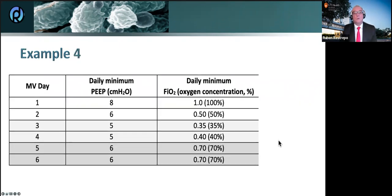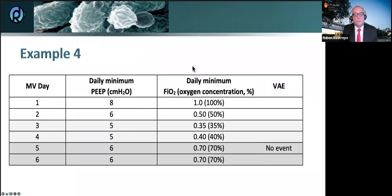In example four, days one through six: daily minimum PEEP is 8, 6, 5, 5, 6, 6. As you can see, there's no event — no complication — because after going from 40 to 70% FiO2, that might be a 30% increase, but you don't have two stable days preceding it. So this is not an event.